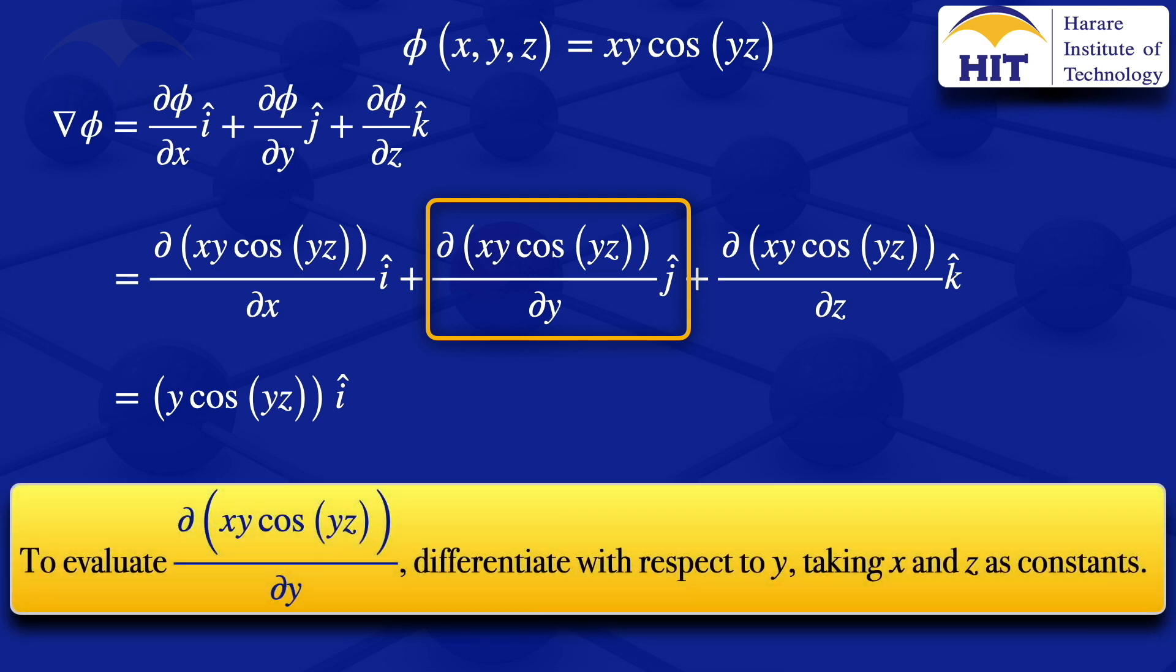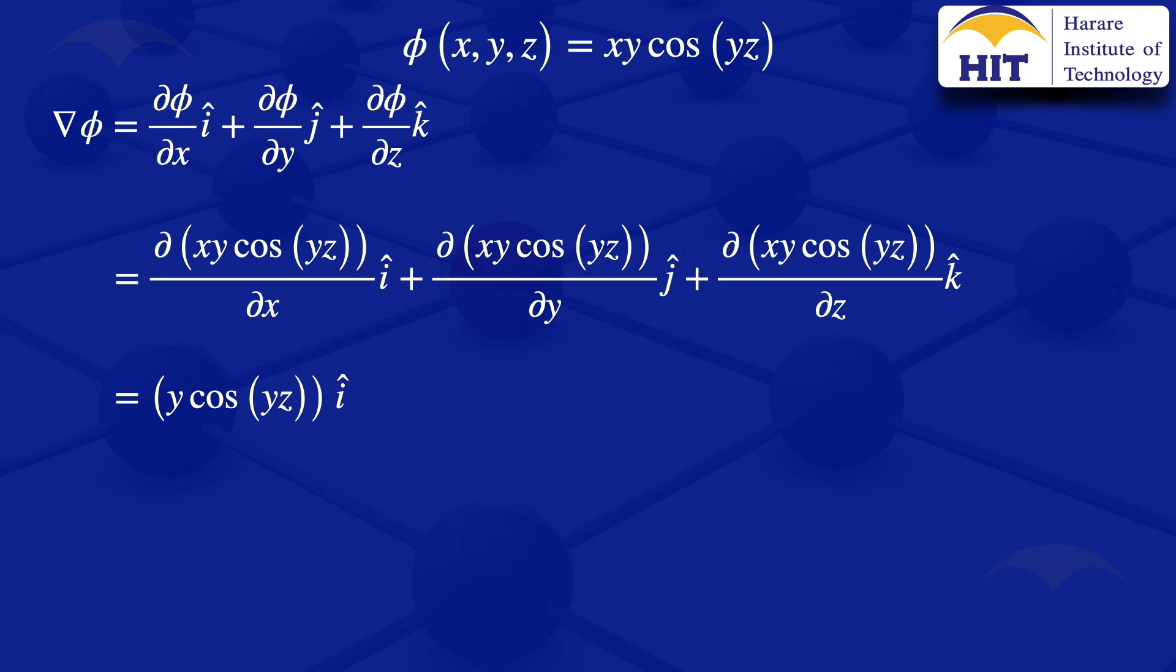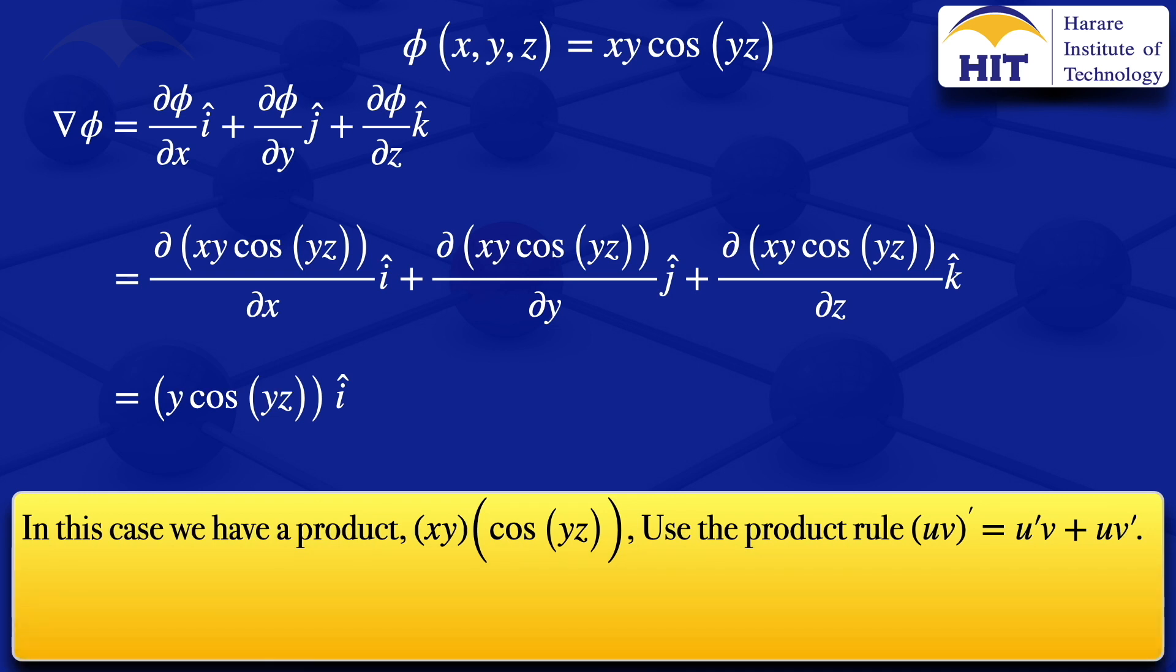But in this case we see that there is a product where we have the xy there and the cosine of yz. These parts that I've put in parenthesis, they are functions of y, so we are having a product of y there. So we have to use the product rule. So for our product rule, I would take the xy to be my u and the cosine of yz, I take it to be my v.